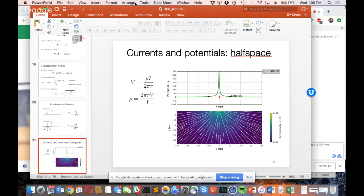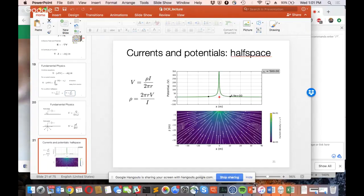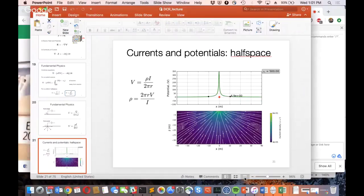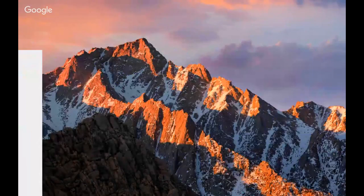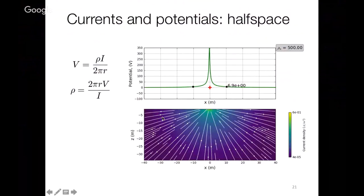We're going to do a bit of reviewing, so anything we don't take up now we can get later. What I'm going to do is take a brief view through DC resistivity. Because you've done the labs, you've actually seen a lot of this stuff, so we can go through it fairly quickly. We put a current into the ground, currents go out, we measure the potential, and we have an expression for potential that we can rearrange to get the true resistivity.